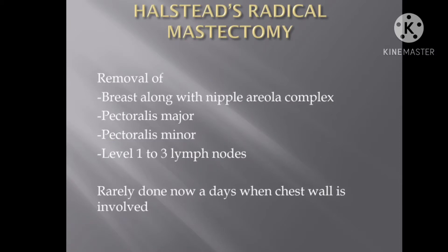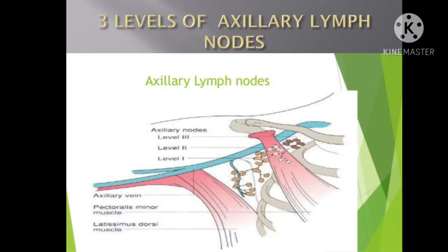In this procedure, what was removed apart from the breast was all the lymph nodes from the axilla and all three levels of lymph nodes. What are those three levels? Level 1, lateral to the pectoralis minor; level 2, behind the pectoralis minor; and level 3, medial to the pectoralis minor.